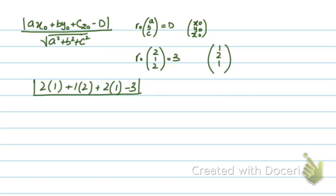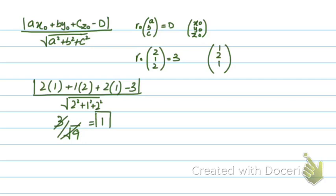This gives |6 − 3| over √(2² + 1² + 2²). So that's 3 over √9 = 3/3 = 1 — the exact same answer. So it's your choice which method you use. These are the two methods to calculate the perpendicular distance from a point to a plane: one is conceptual, the other is a straightforward formula.